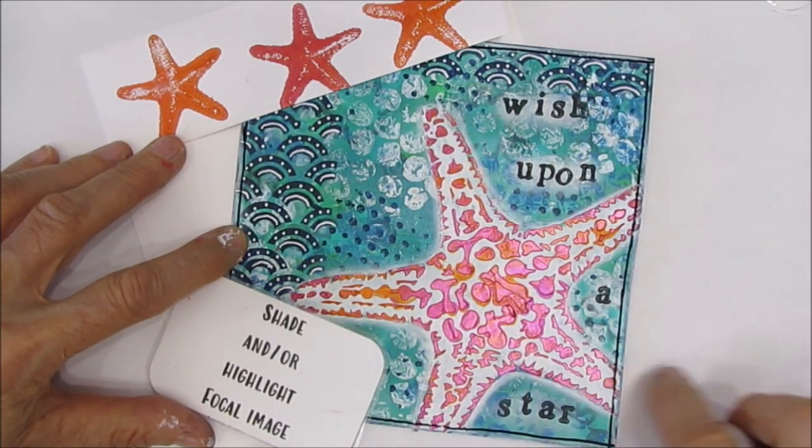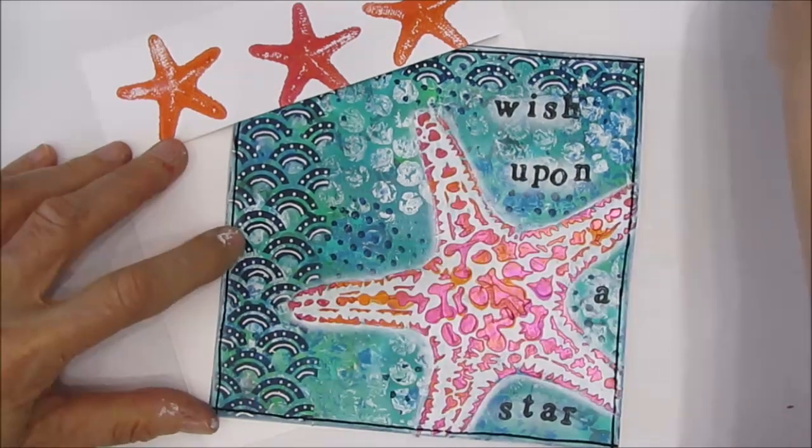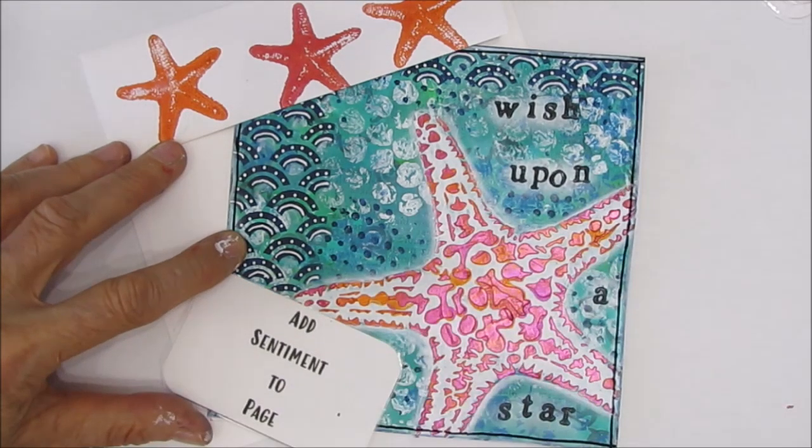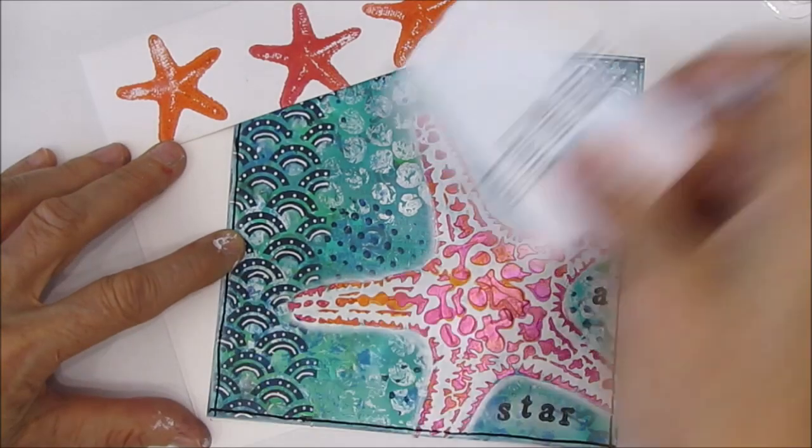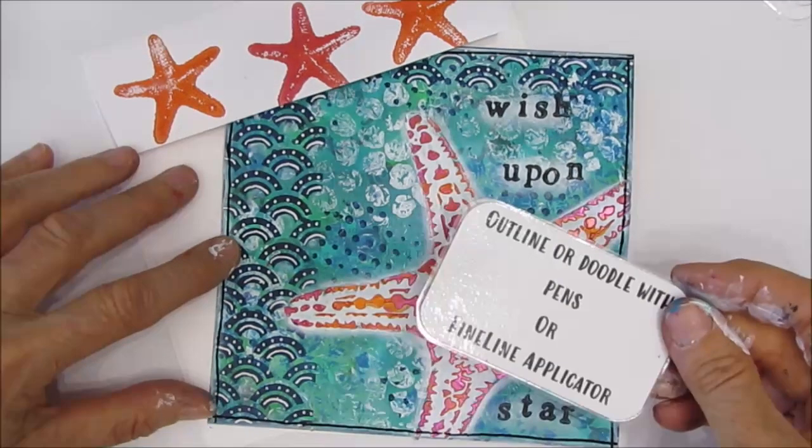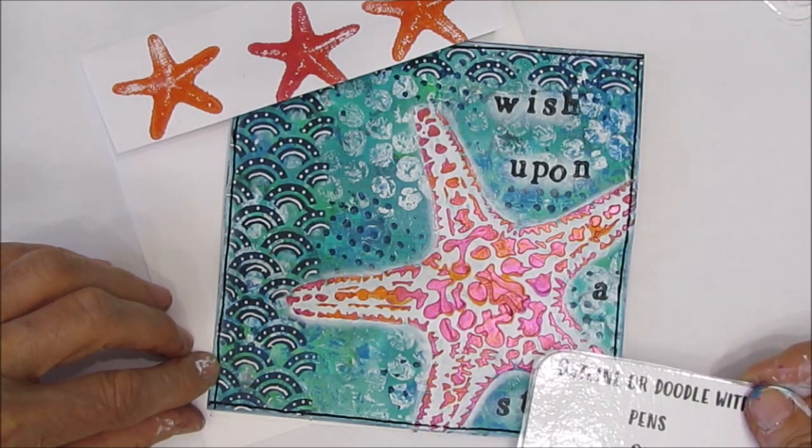I shaded with white around the starfish to bring out the focal image and I edged the page in the same way. I stamped the sentiment with acrylic paint, and then I did some doodling with my posca pens on top of the stenciling.